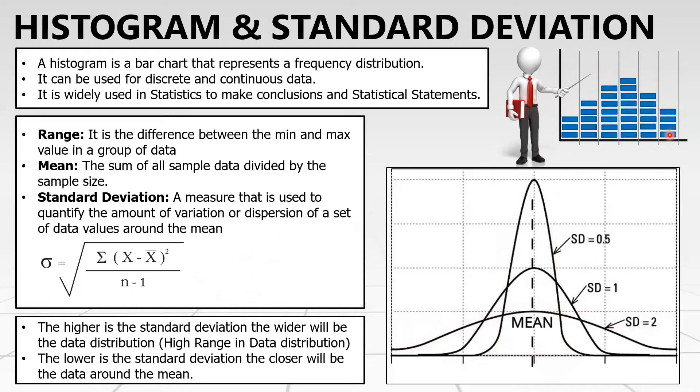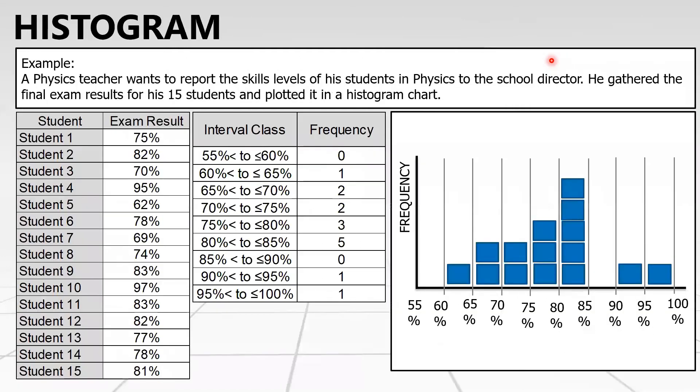If we look at this figure, this is a frequency distribution. My x-axis is my measurement of interest, divided into equal intervals, while the y-axis represents the frequency. I believe it would be much better if we go directly to an example where we can better understand the histogram and the standard deviation.